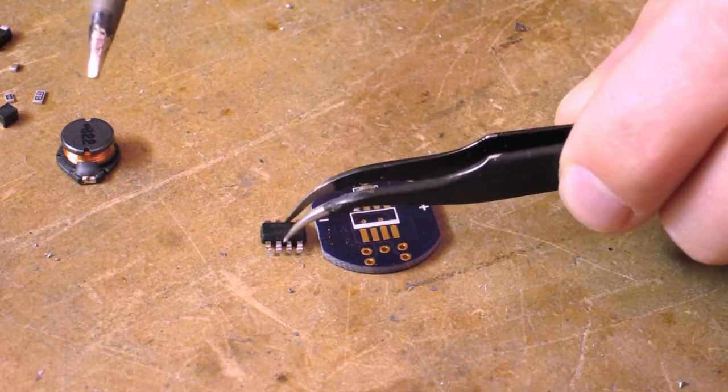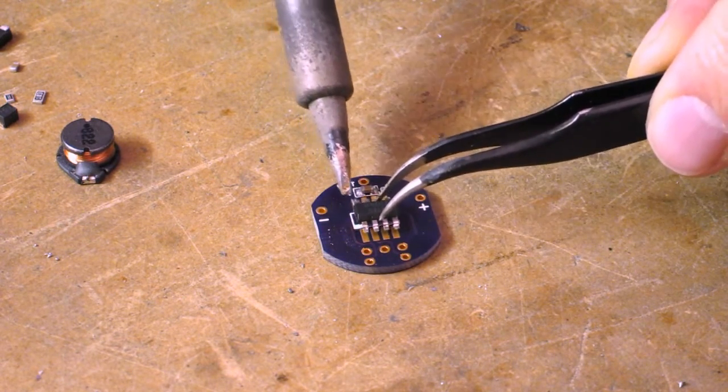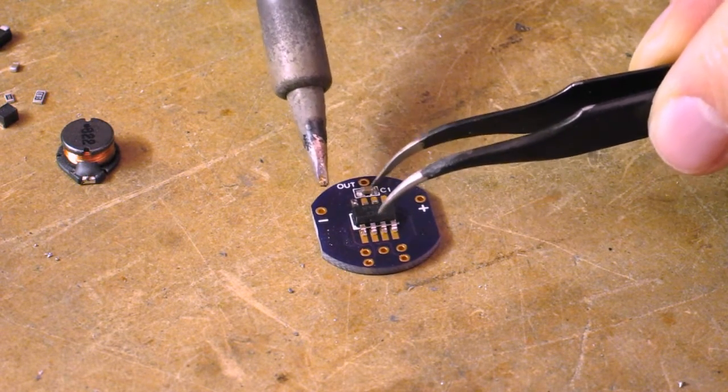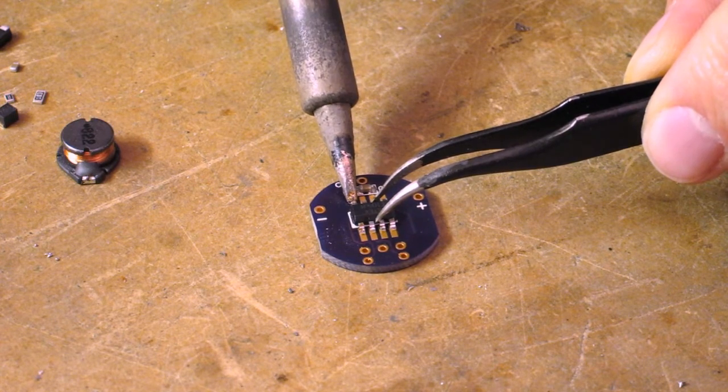Again, I like to add solder to one of the pads. I can use that to position the part very carefully so that everything lines up. Once I've finished, then I get to solder the remaining pads.